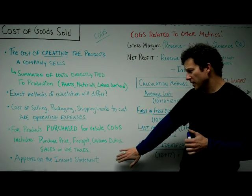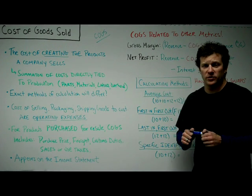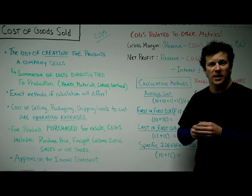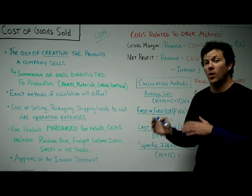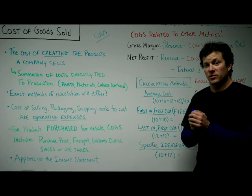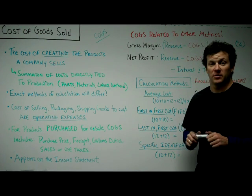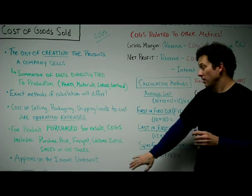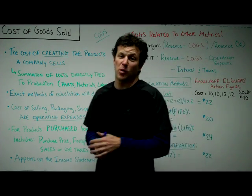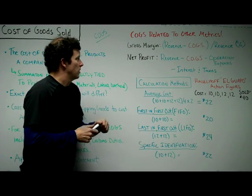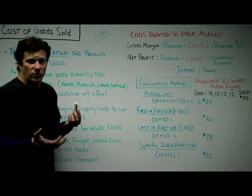Cost of goods sold appears on the income statement. Once you get to know income statements, you'll see it there. The income statement is a look at a period of time — watch our videos on income statements to learn more. But cost of goods sold is really important; it's the cost of producing your products.